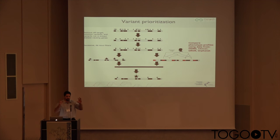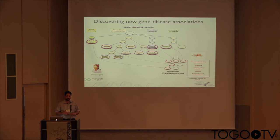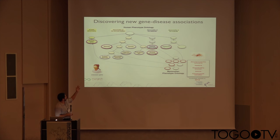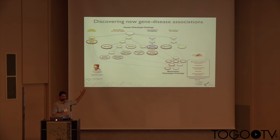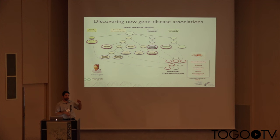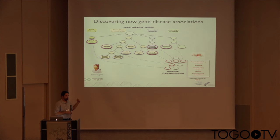The same idea can be used in a slightly different manner — coming back to the previous presentation, you can use it also for the discovery of new disease-gene associations, where you don't know the gene in the patient, but you have a phenotypic similarity. You find a mouse model with the same phenotypic profile that also has a variant of interest for the patient.